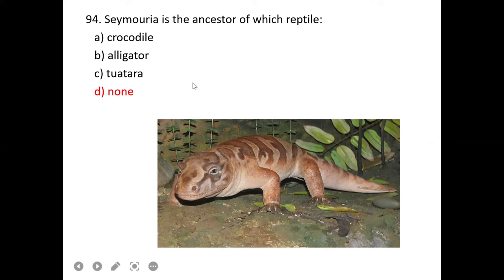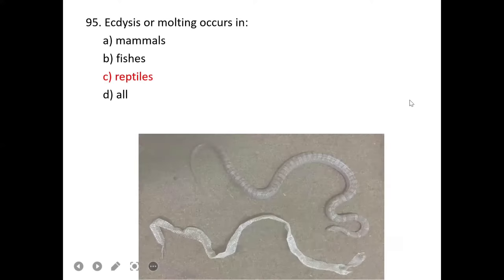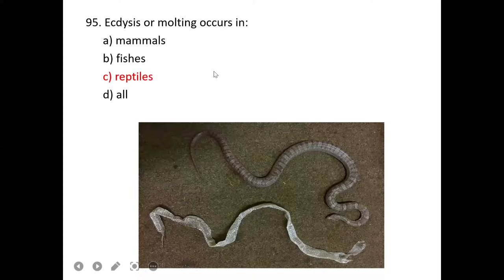Ecdysis or molting occurs mostly in birds, insects, reptiles, and crustaceans. C is the correct option. Beloniformes is the order of flying fish, ray-finned fishes.